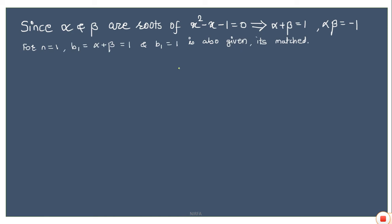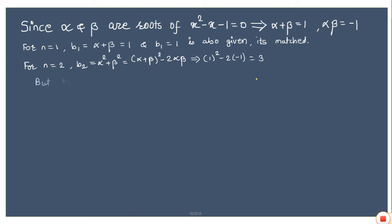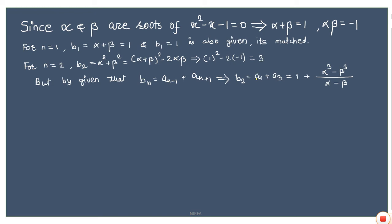Now checking for n = 2: b₂ according to option 1 is α² + β². Using the identity (α + β)² - 2αβ, substituting α + β = 1 and αβ = -1, I get 1 + 2 = 3. Now putting n = 2 in the given formula for bₙ = aₙ₋₁ + aₙ₊₁, I get b₂ = a₁ + a₃.